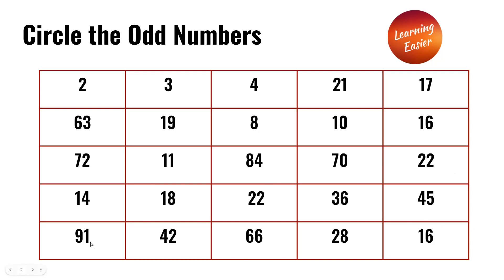Lastly, the fifth row: 91, 42, 66, 28, and 16. The odd number here is 91. Check for answers.